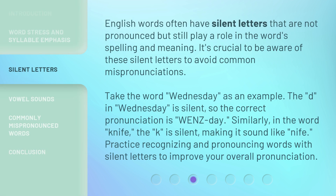English words often have silent letters that are not pronounced but still play a role in the word's spelling and meaning. It's crucial to be aware of these silent letters to avoid common mispronunciations. Take the word 'Wednesday' as an example — the 'D' in 'Wednesday' is silent, so the correct pronunciation is 'Wednesday.' Similarly, in the word 'knife,' the 'K' is silent, making it sound like 'knife.' Practice recognizing and pronouncing words with silent letters to improve your overall pronunciation.